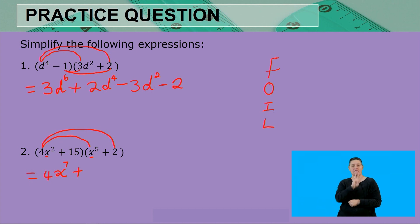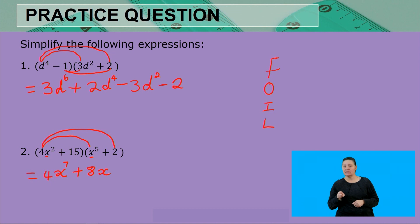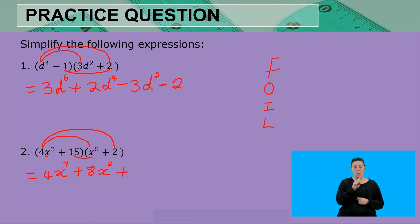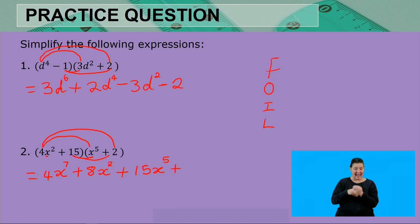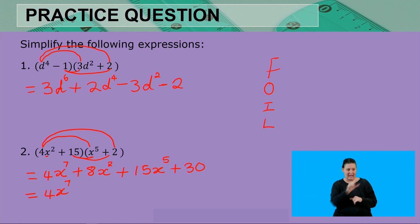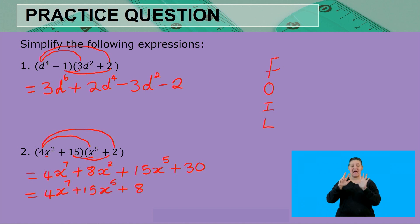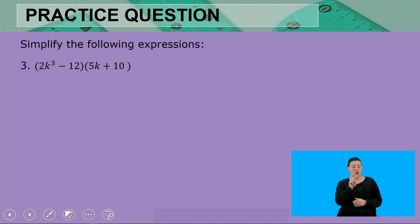Continuing: 15 × x⁵, so 15 × 1 = 15 and since 15 has no variable we take x⁵ as it is: 15x⁵. Finally, 15 × 2 = 30. Arranging in descending order of powers: 4x⁷ + 15x⁵ + 8x² + 30. That is our final answer.